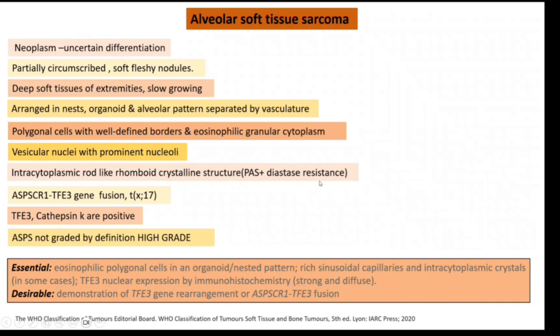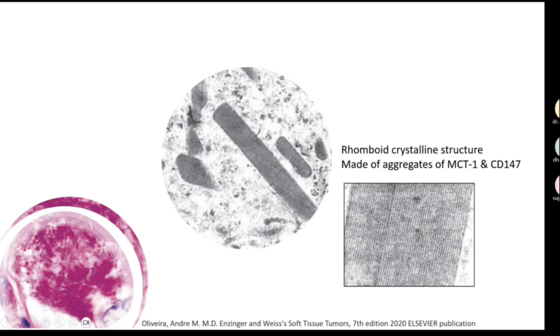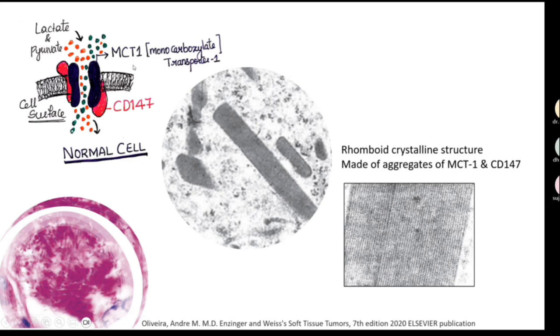PAS was done and it was positive but diastase resistant — meaning it is not glycogen. So they performed electron microscopy to identify what this eosinophilic cytoplasm represents in alveolar soft part sarcoma. Electron microscopy found rhomboid crystals, which are made up of MCT1 and CD147.